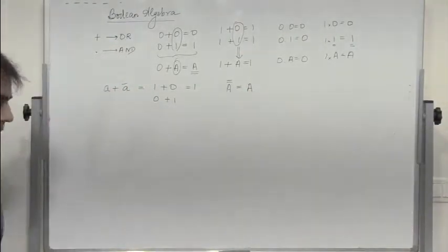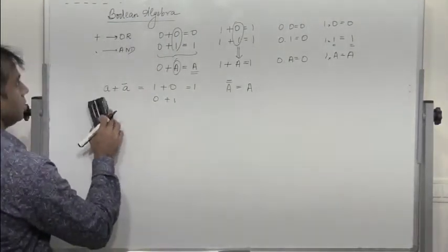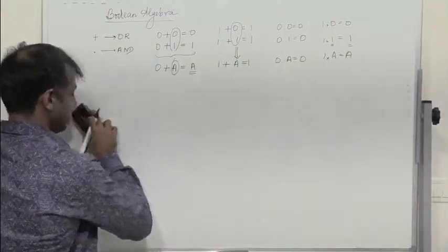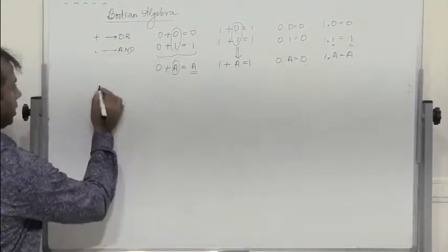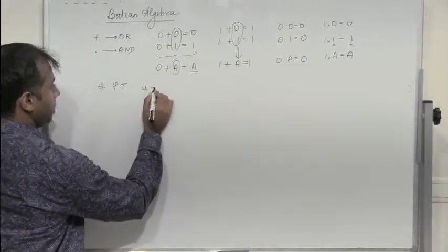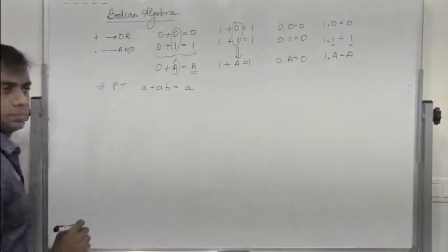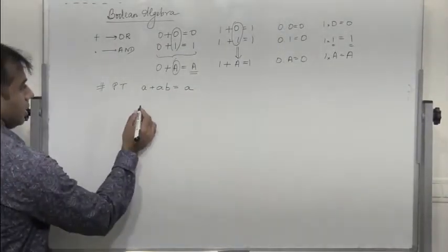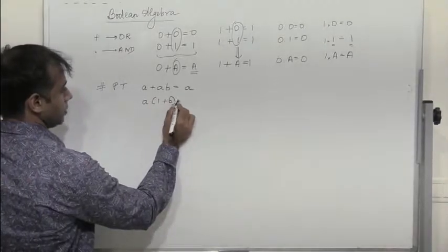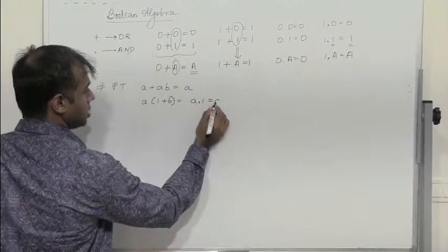With these fundamental laws of Boolean algebra, let us try to simplify a few expressions. Prove that A plus AB equals A. Take A common: we get A(1 plus B). Since 1 plus anything is always 1, it is A into 1, which is A.